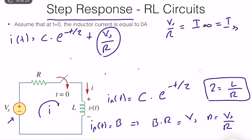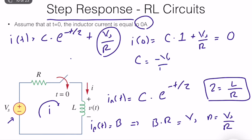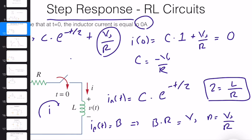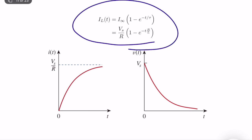Applying the initial condition: I of zero equals C times one plus Vs divided by R, and it equals zero because the initial condition is zero. So C is equal to minus Vs divided by R. Writing this in compact form, the general solution is: I_L equals I infinity times the quantity one minus e to the power minus T divided by tau, where tau equals L over R.